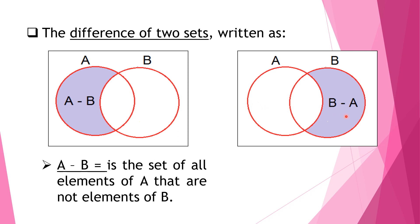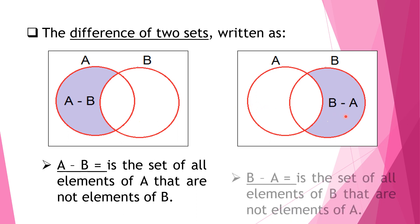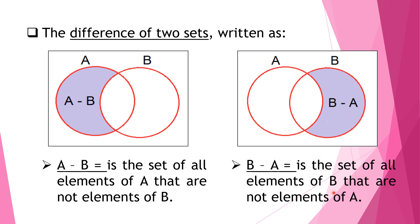Next is B minus A, which is the opposite of A minus B. B minus A is the set of all elements of B that are not elements of A. When we say B minus A, those are the elements that B has but are not in A. We do not shade the whole circle of B because the smaller part of B is already covered by A. So we only write the elements in the remaining part of B.